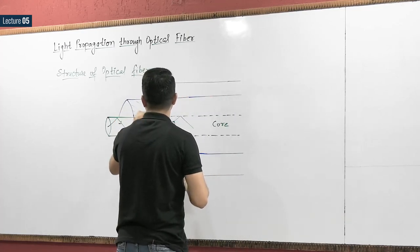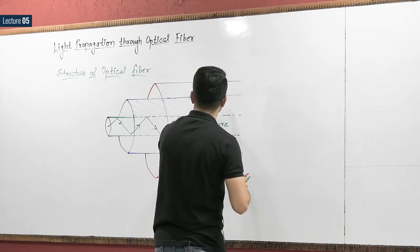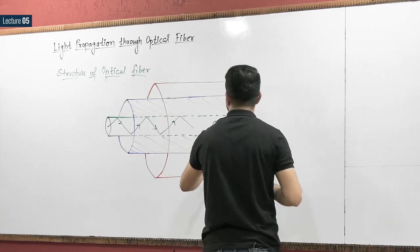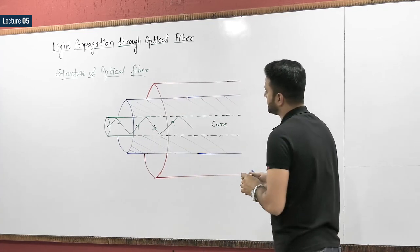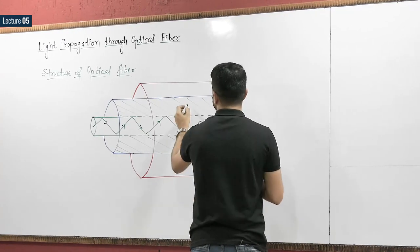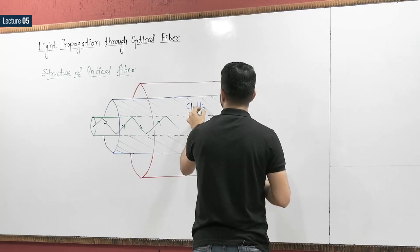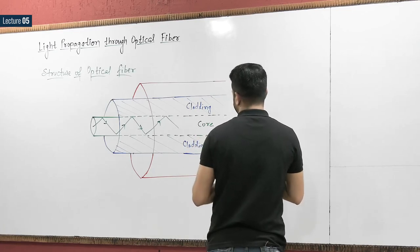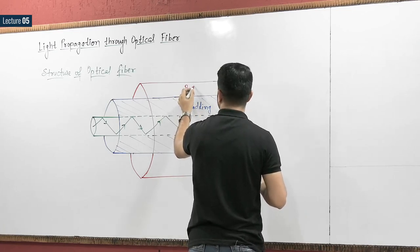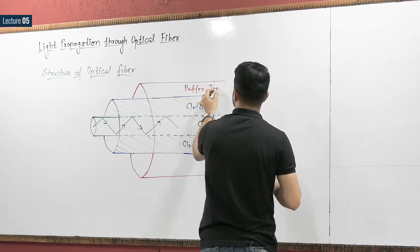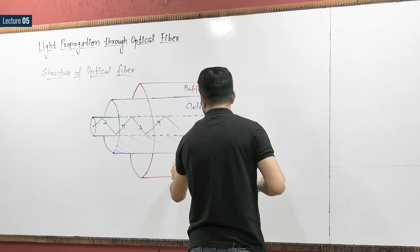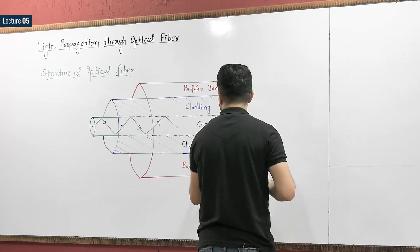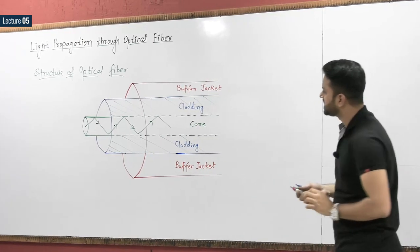This part is known as the cladding — the outer region of the core. And this part is known as the buffer jacket, which provides shielding to the optical fiber. So these are the three parts forming the structure of the optical fiber.